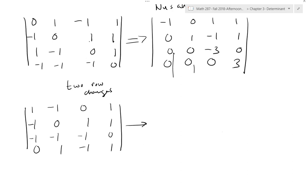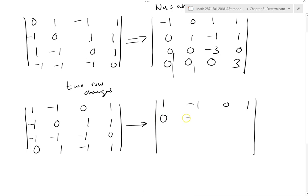It stays the same. So this is then going to be: row 1 is 1, negative 1, 0, 1; row 2 is 0, negative 1, 1, 2; row 3 is 0, negative 2, negative 1, 1; row 4 is 0, 1, negative 1, 1.